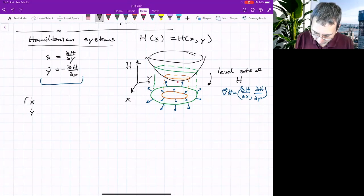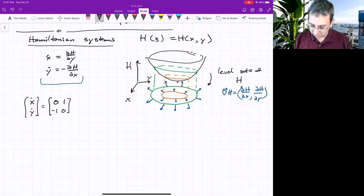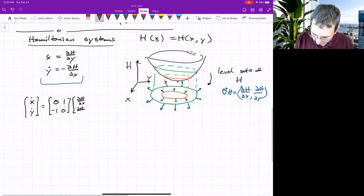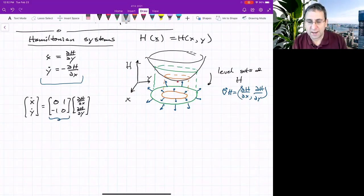it looks like x dot y dot equals 0, 1, negative 1, 0. So we've got this matrix in front of the gradient. Partial h partial x, partial h partial y. This matrix is equivalent to a 90 degree turn clockwise.